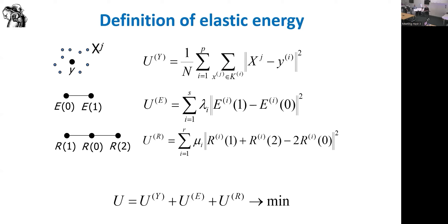We have two types of elastic elements. For an edge (two centers E1 and E2), there is a coefficient times the squared distance between them. For a rib (three centers), we have the bending energy. How edges and ribs are distributed among the network is a more interesting question. The elementary elements are data points and nodes, and not every pair of nodes is connected.